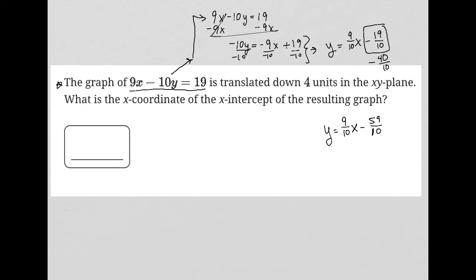Now I want to figure out what is the x-intercept. We find the x-intercept by replacing y with 0. The x-intercept for any graph is the place where y equals 0. So I'm going to replace y with 0: 0 equals 9/10 x minus 59/10.